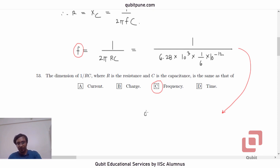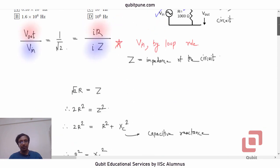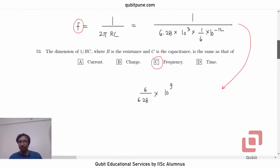So, 6 will go in the numerator. 6.28 will set in the denominator. 3 minus 12, negative 9. In the numerator, it will be 10 raised to 9. Now, observe that they want us to find the approximate frequency. 6 upon 6.28 is approximately 1, not exactly 1, slightly smaller than that. But it is not too small, let us say half or 0.5. So, we can take it as 10 raised to 9 hertz.